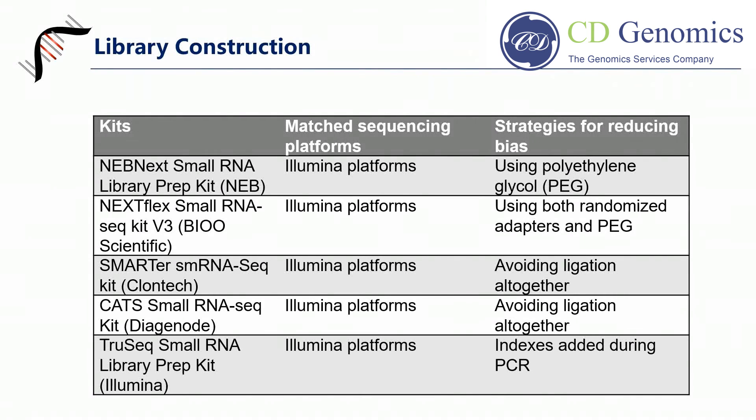After the quality control of small RNA libraries, high-throughput sequencing is then performed. Illumina platforms are the most popular instruments for small RNA sequencing, such as MiSeq and HiSeq.